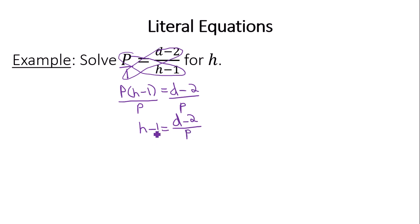To get H by itself now, since we are subtracting one, you add one to both sides. And it looks like H is equal to D minus 2 divided by P plus 1. Now the formula is solved for H.